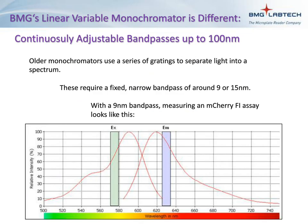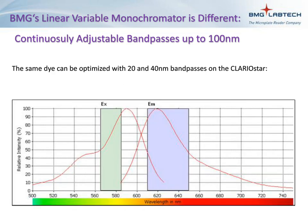As an example, let's look at what settings could be used on a traditional monochromator to perform detection of mCherry. The mCherry excitation and emission profile is shown overlaid with a 9-nanometer bandpass for both excitation and emission. With the ClarioStar's ability to adjust the bandpass, the best possible combination of excitation and emissions can be used. Looking at the same dye with the ClarioStar, the settings can be optimized with a 20-nanometer excitation bandpass and a 40-nanometer emission bandpass.